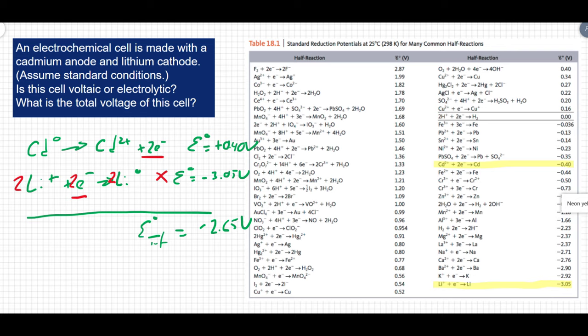One final thing, some textbooks do like to show the line notation here, and this is something that you would see on an AP exam as well. So the line notation for this electrochemical cell is that you would have cadmium neutral oxidizing to cadmium 2 plus, and then we would separate that with a double line to show the lithium plus reducing to the lithium neutral.